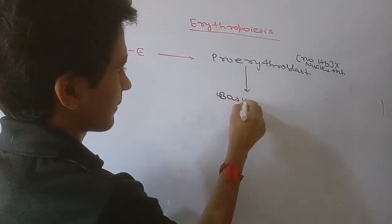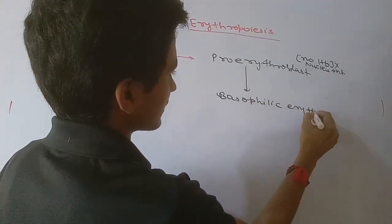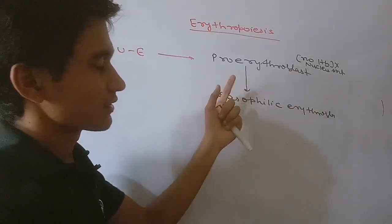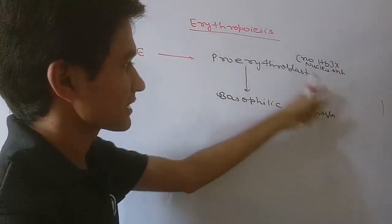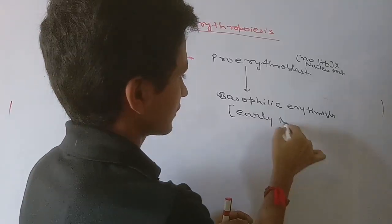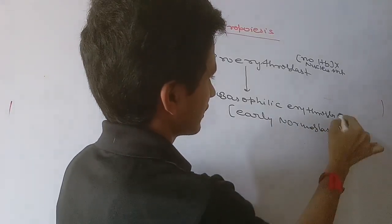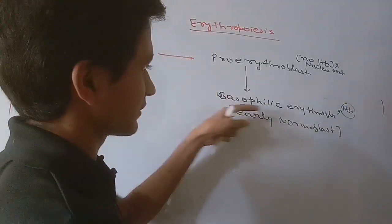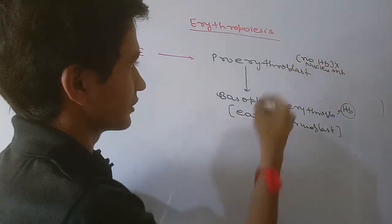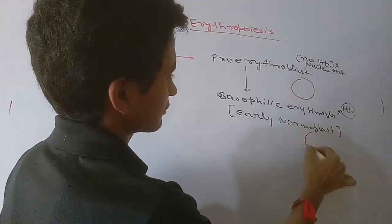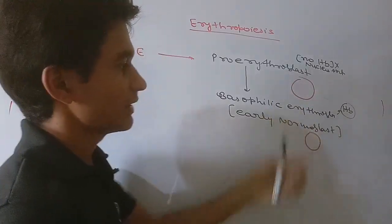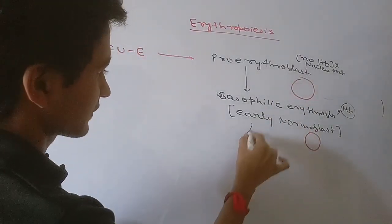The pro-erythroblast is converted into the basophilic erythroblast. The name 'basophilic' is given because this erythroblast is stained easily by basic dye. It is also called the early normoblast. For the first time, hemoglobin appears in this basophilic erythroblast, and the nucleus size begins to reduce.